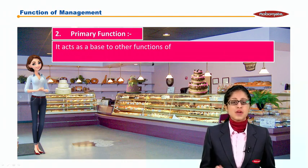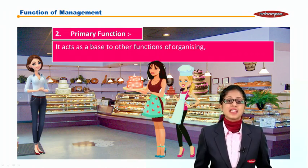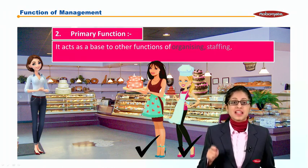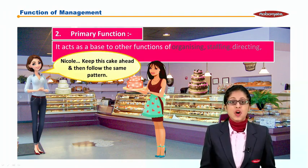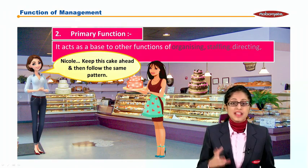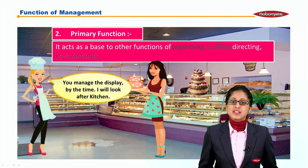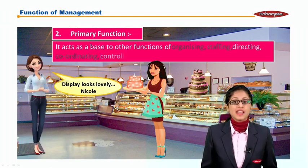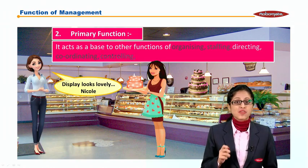Planning acts as a base to other functions of management — organizing, staffing, directing, coordinating, and controlling. As you can see, the kitchen girls are organizing the cakes at the display. Annie staffed them — the correct person at the correct time at the correct designation. Annie is directing Nicole: 'Nicole, keep this cake ahead and then follow the same pattern.' They are coordinating: 'You manage the display while I look after the kitchen.' And controlling is keeping a check — Annie says 'This display looks lovely, Nicole,' checking whether things are being done correctly.